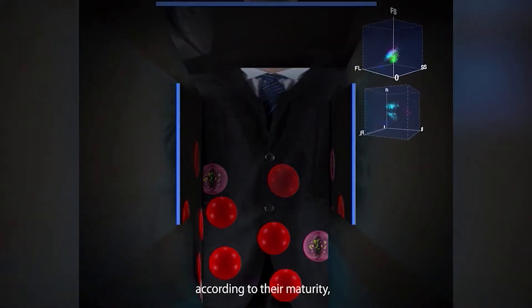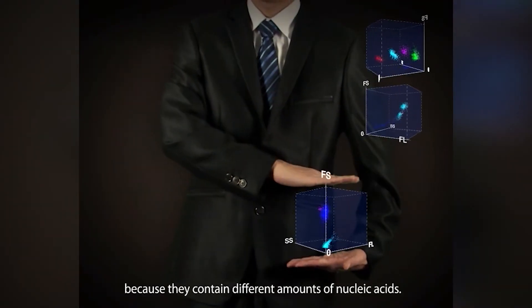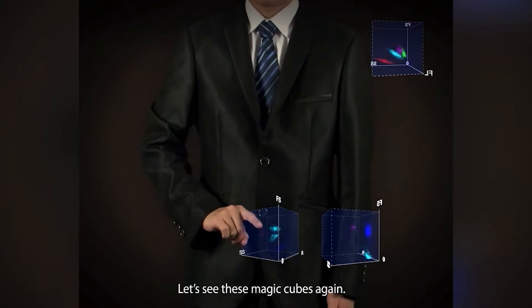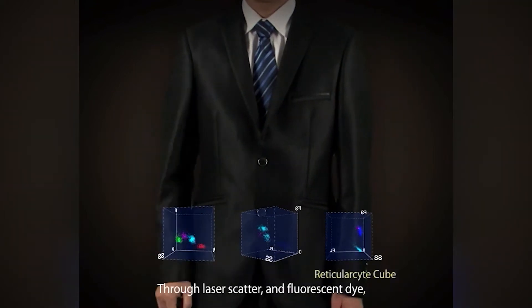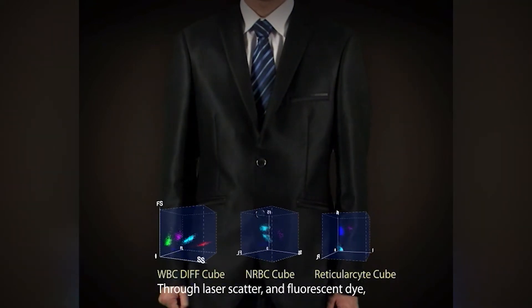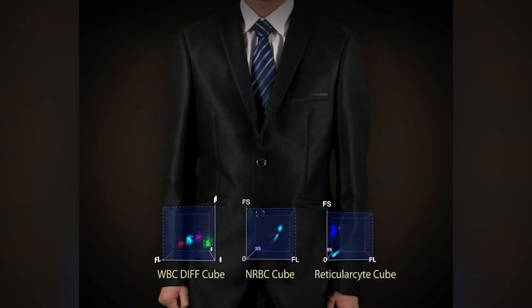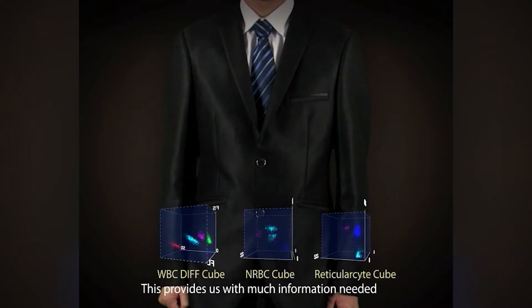Let's see these magic cubes again. Through laser scatter and fluorescent dye, cells are anchored at specific positions. This provides us with much information needed for blood cell examination. And this is our SF Cube technology.